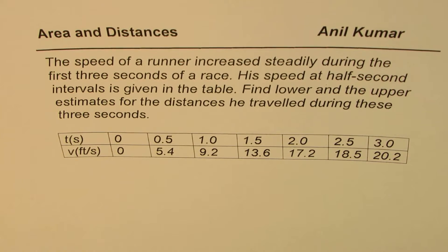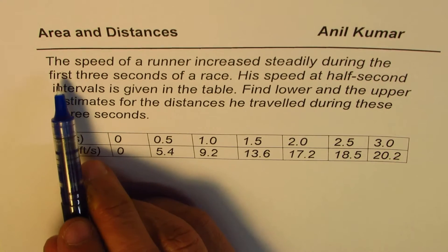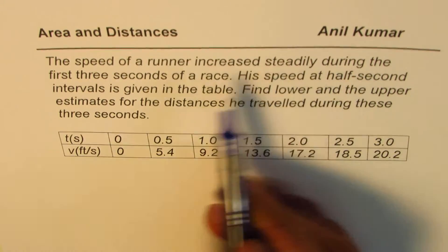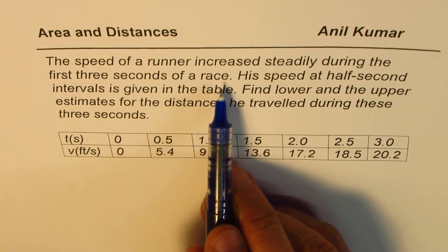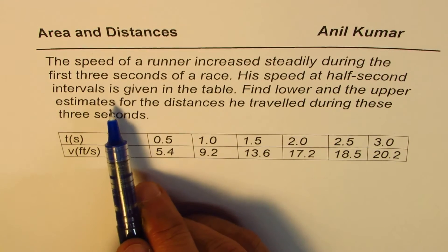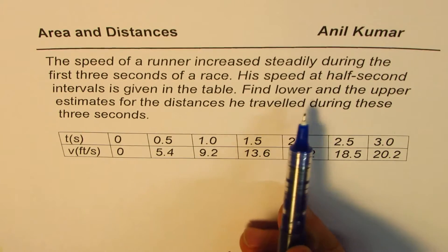I'm Alil Kumar and in this video we will understand how to estimate the distance traveled in a given time where the speed is changing. The question here is: the speed of a runner increased steadily during the first three seconds of a race. His speed at half-second intervals is given in a table — find lower and upper estimates for the distance he traveled during these three seconds.